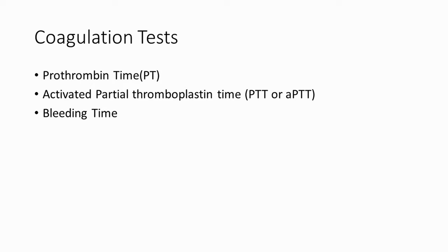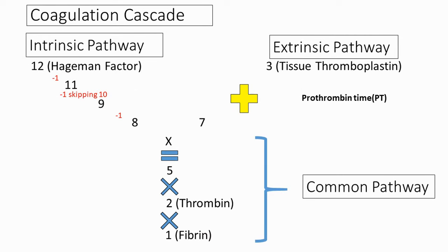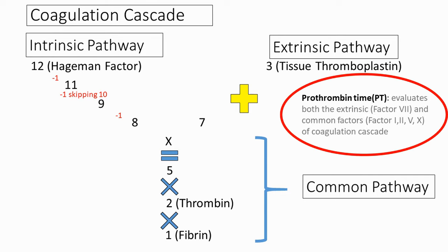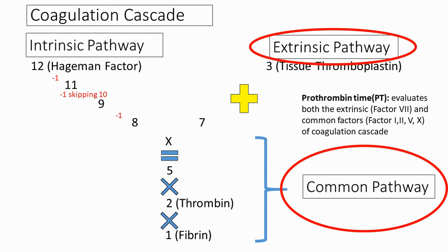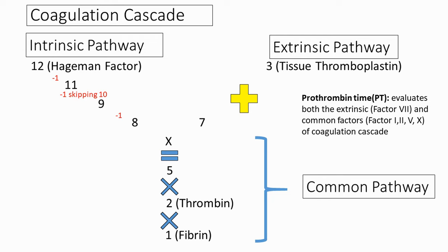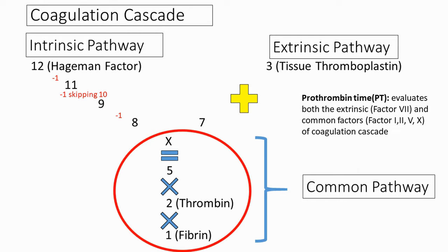Before finishing hemostasis, let's briefly cover some coagulation tests used to confirm diagnoses of blood disorders. Prothrombin time (PT) evaluates factors involved in the extrinsic pathway and common pathway. The factor tested in the extrinsic pathway is factor 7, and the factors tested in the common pathway are factors 1, 2, 5, and 10.